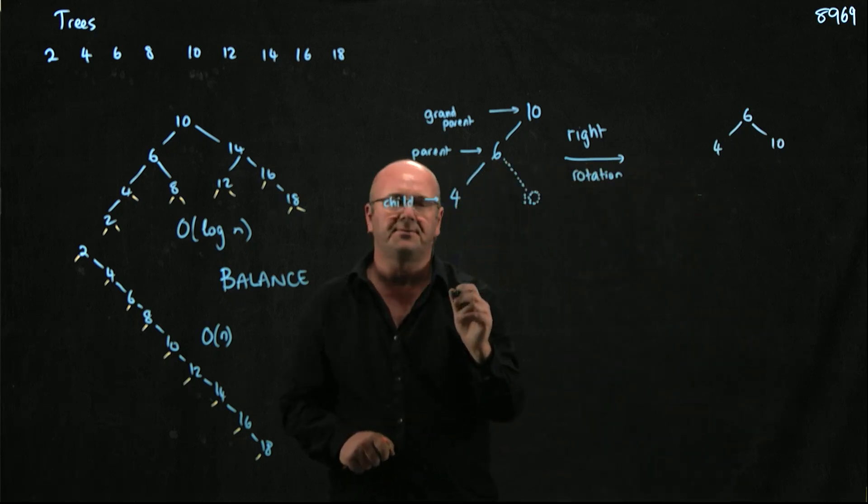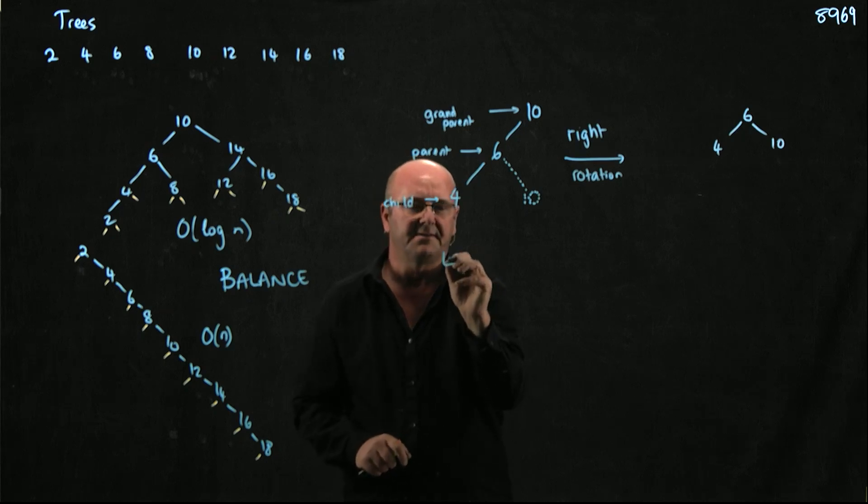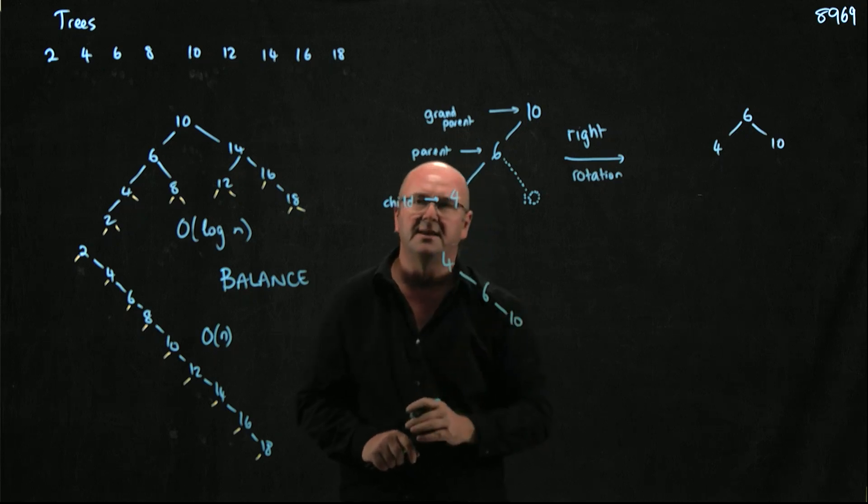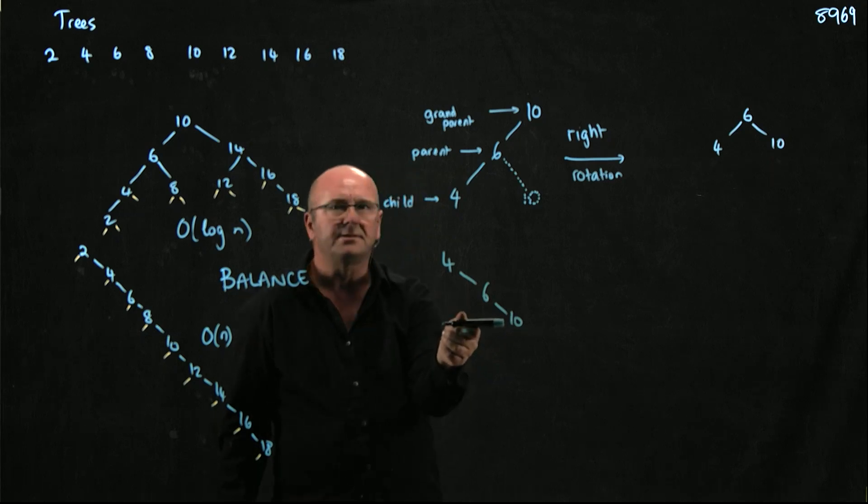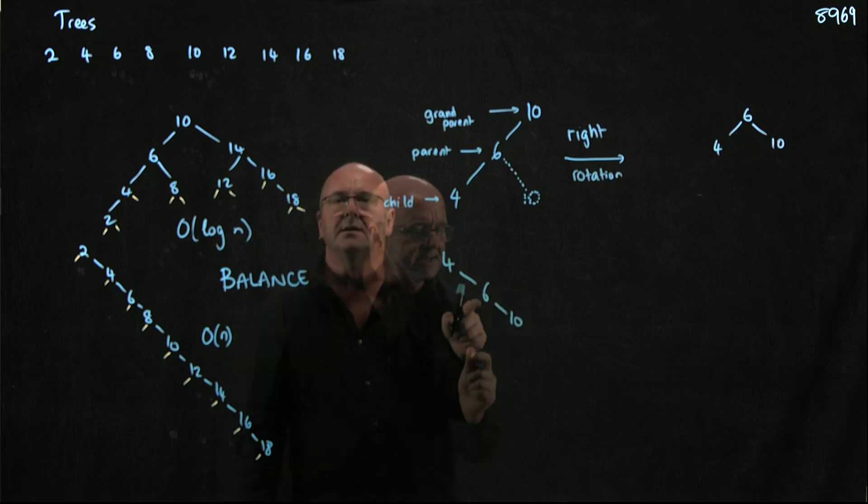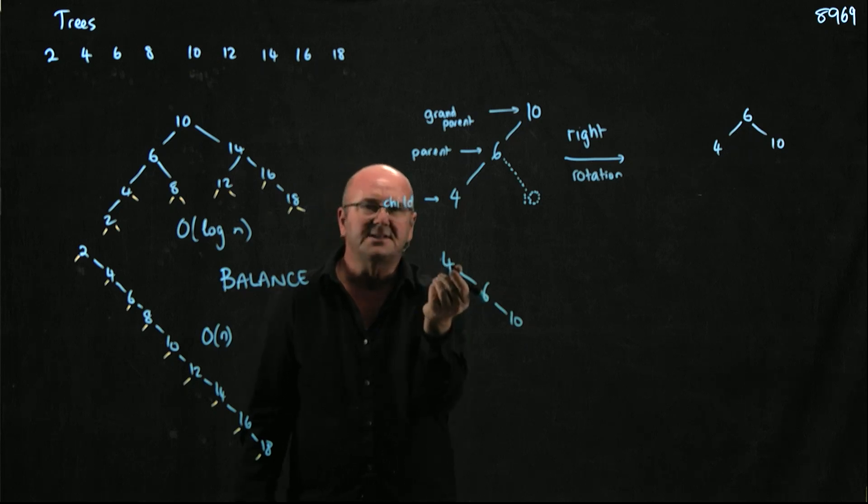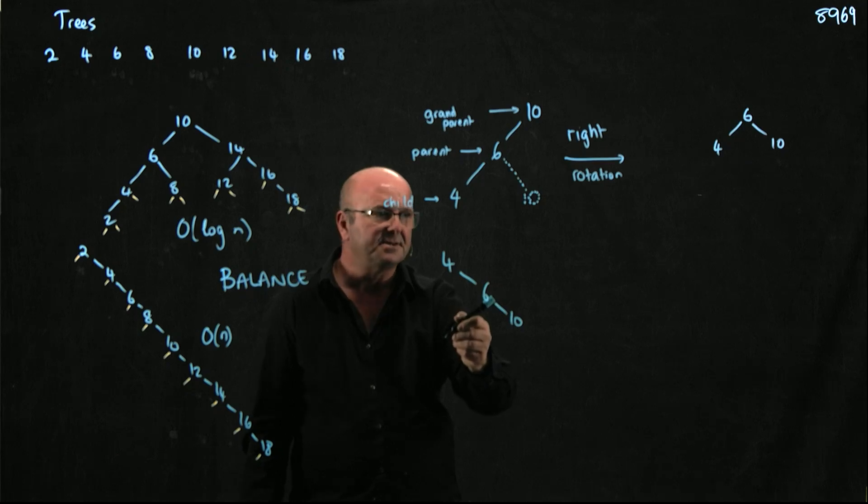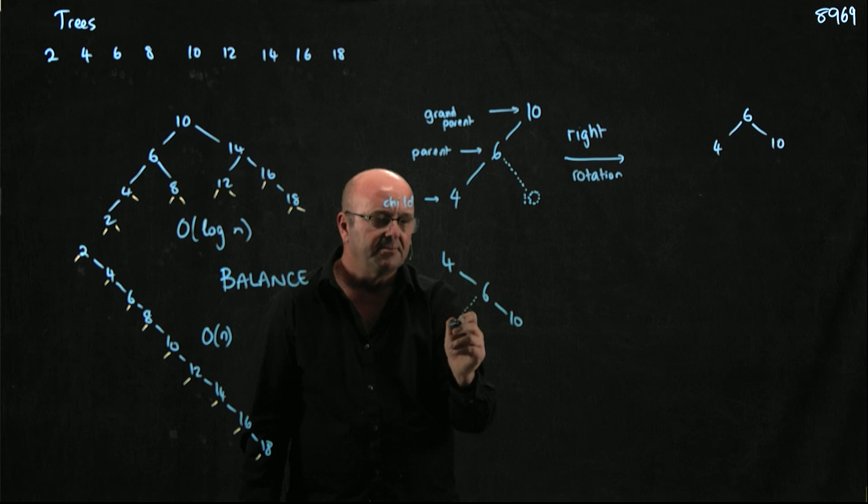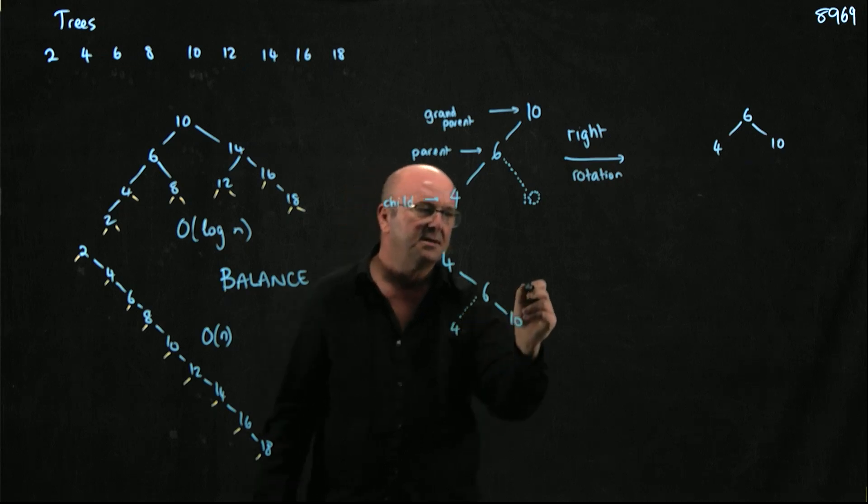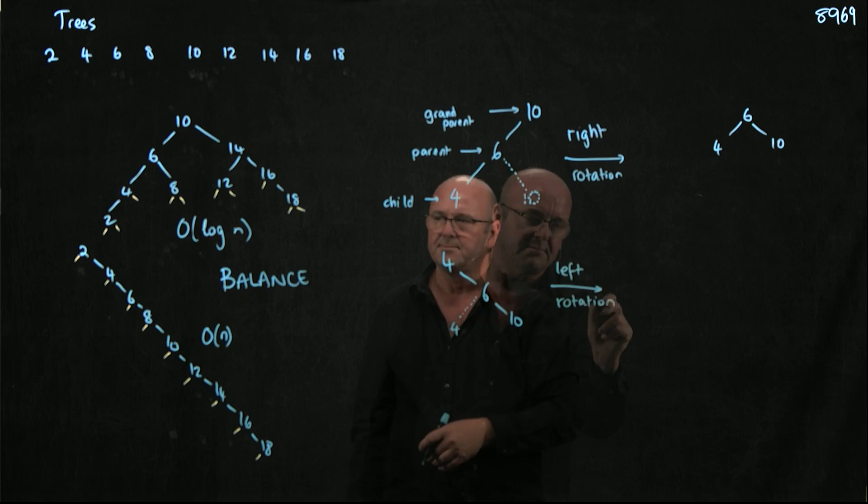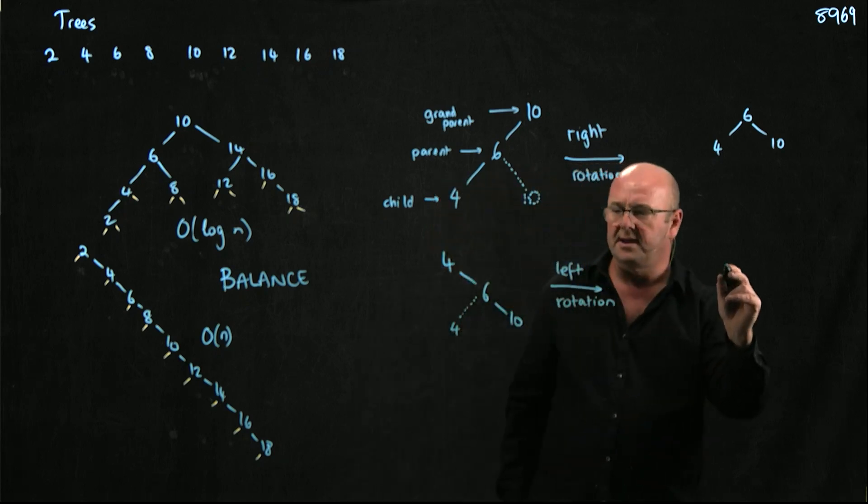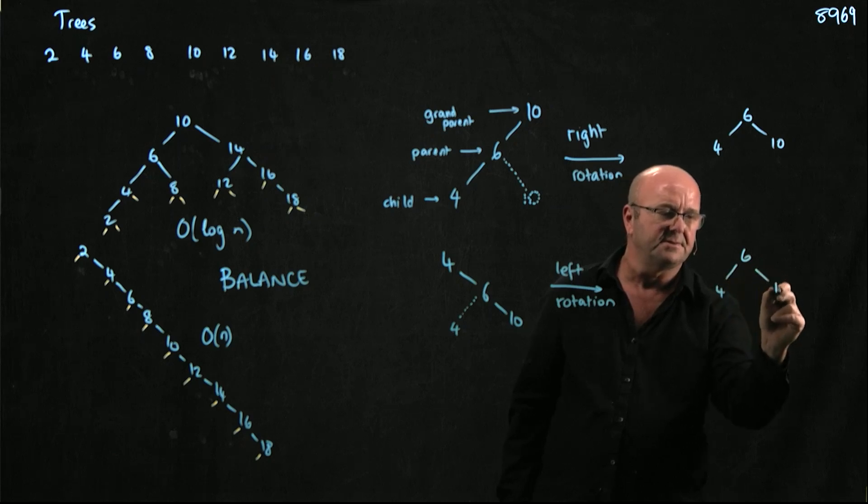Similarly, if we have, let's say we have 4, 6, and then we add 10. Again, the 10, when we add it, is the node that causes all the problems. Oh, I hate you 10. You've been nothing but trouble. Child, parent, grandparent. What we're going to do is take the grandparent and we're going to rotate it around so that the grandparent becomes the new child. And so this is called a left rotation. And then we end up with 6, 4, 10.